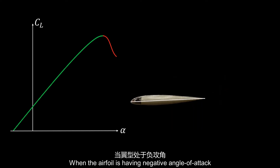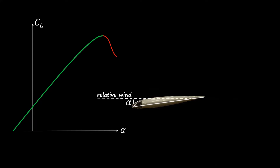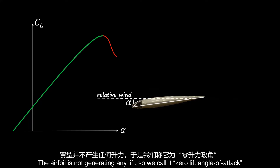When an airfoil has a negative angle of attack — which is the angle between the chord line and the relative wind — the airfoil is not generating any lift, so we call it the zero lift angle of attack.